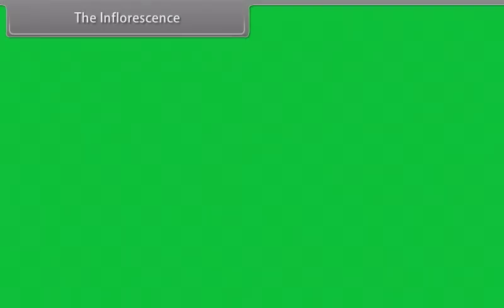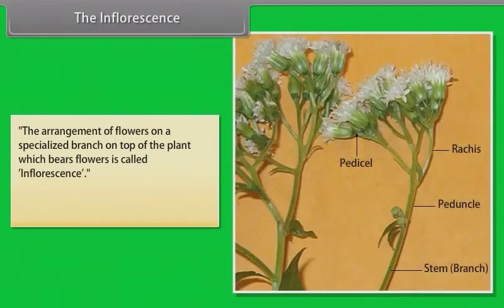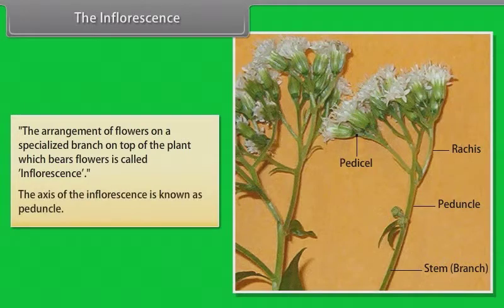The inflorescence is the arrangement of flowers on a specialized branch on top of the plant which bears flowers. The axis of inflorescence is known as peduncle.